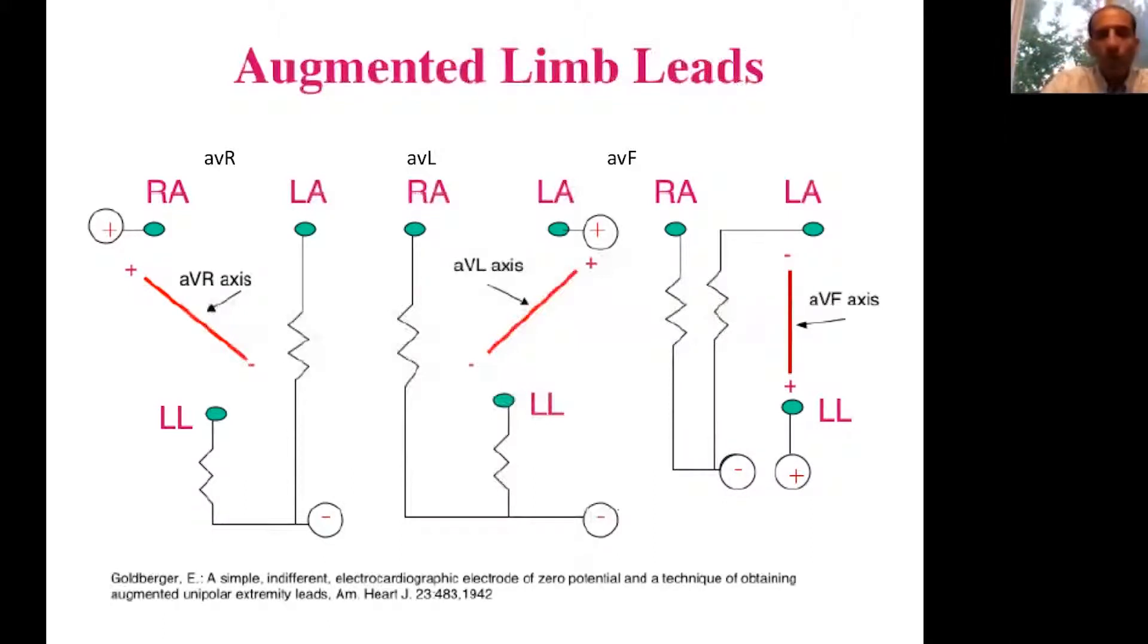The basic three leads that I showed you—one, two, and three—this slide shows you the augmented leads on the ECG. The augmented leads on the ECG are the AVR, AVL, and AVF, and this is how they are derived.